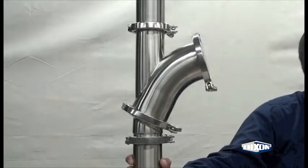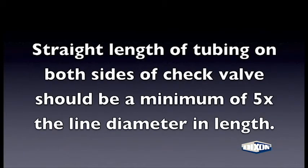The tubing on either side of the valve should be at least five times the line diameter from sources of unstable flow.